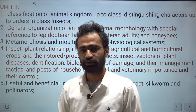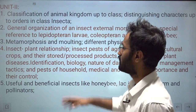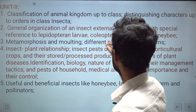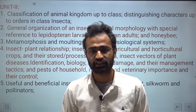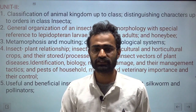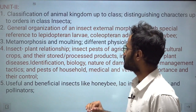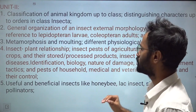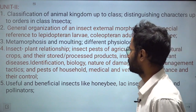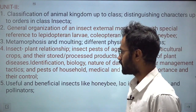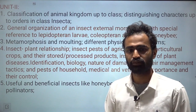Now moving to the subject-specific knowledge for entomology. The first part is systematics, covering the classification of the animal kingdom up to the class level, distinguishing characters of orders within Insecta, and important families within some orders. From morphology, we have the general organization of an insect — external morphology with special reference to Lepidopteran larvae, Coleopteran adults, and honey bees.